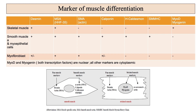Desmin is the intermediate filament counterpart of cytokeratin in epithelial cells. Muscle-specific actin (MSA), like desmin, is another pan-muscle marker; the antibody to MSA recognizes the epitope common to alpha-skeletal, alpha-cardiac, and gamma-smooth muscle actin. Smooth muscle actin (alpha-actin) is a smooth muscle-specific isoform absent in striated muscle. Calponin, h-caldesmon, and smooth muscle myosin heavy chain are unique to smooth muscle. Caldesmon and SMMHC are generally absent in myofibroblasts. MyoD1 and myogenin are transcription factors giving nuclear positivity in skeletal muscle, absent in smooth muscle.